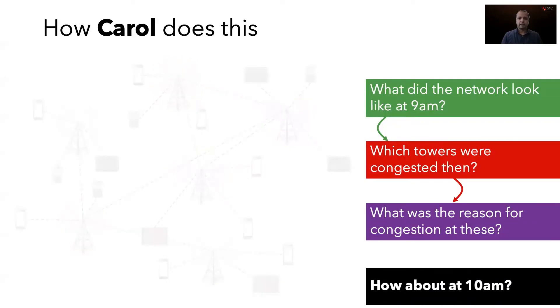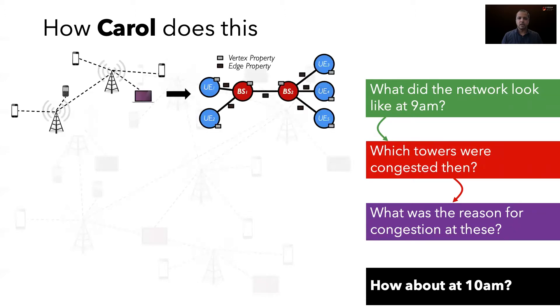Today, Carol leverages graph analysis to actually run these queries. It is intuitive to think of network telemetry data as a property graph. At a given point in time, base stations and users are vertices, connectivity between them can be edges, and metadata can be stored as properties. Hence, Carol's job depends on retrieving hundreds of random snapshots of this graph structured data and running ad hoc queries on them.